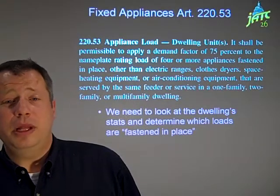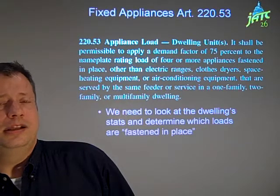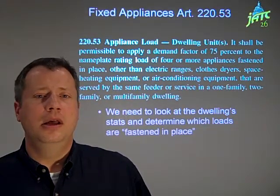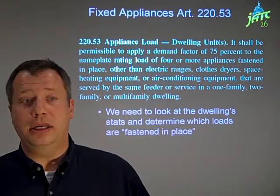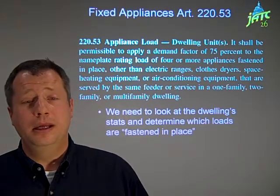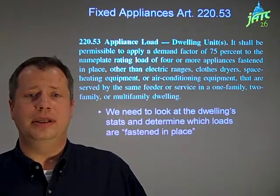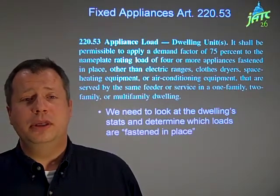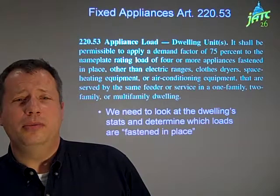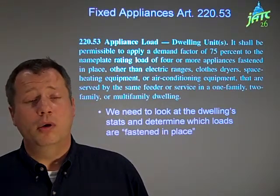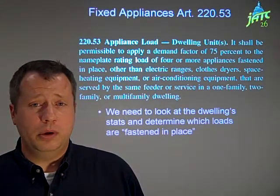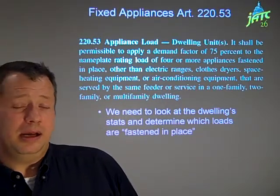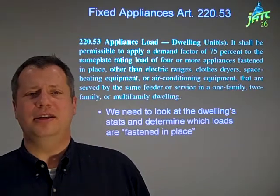The next part is fixed appliances. Fixed appliances are not the same as small appliances — small appliances are cord-and-plug connected things throughout the house that the engineer or electrician has no real idea about in terms of load. Fixed appliances are generally those that appear on the prints, things like water heaters, blower motors, and garbage disposals — items that are fixed in place and probably have a dedicated circuit.